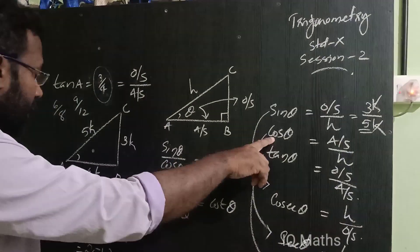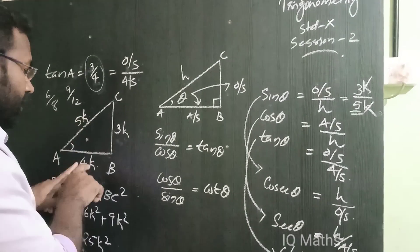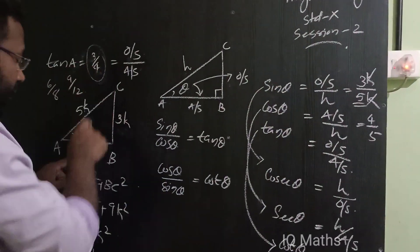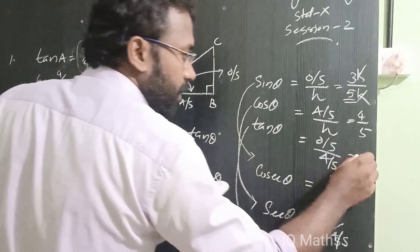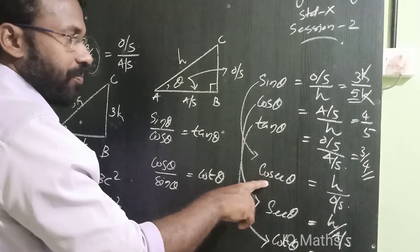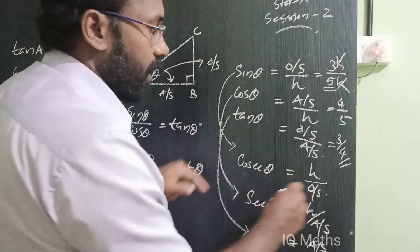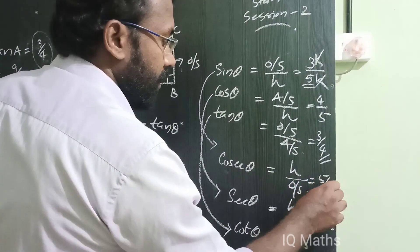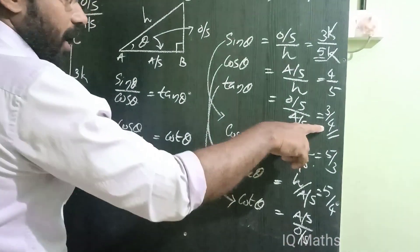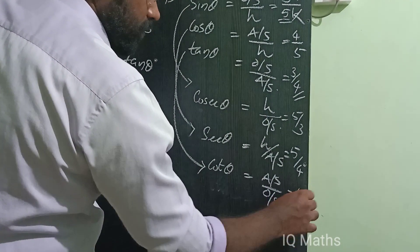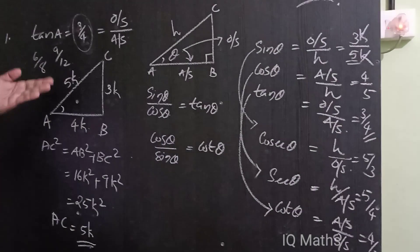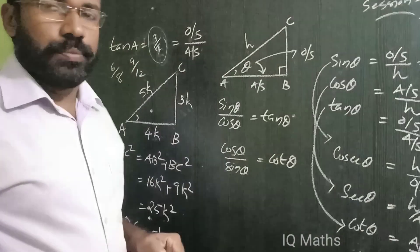Similarly, cos theta will be 4k by 5k, that is 4 by 5. Tan A is 3k by 4k, that is 3 by 4. Cosec theta, the reciprocal of sin theta, is 5 by 3. Sec theta is 5 by 4, and cot theta is 4 by 3. These are the trigonometric ratios for tan A equal to 3 by 4.